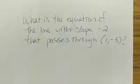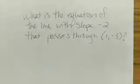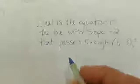So let's take a look at this question. We're asked to write the equation of a line with slope negative 2. So we know that m equals negative 2. And it passes through this point.